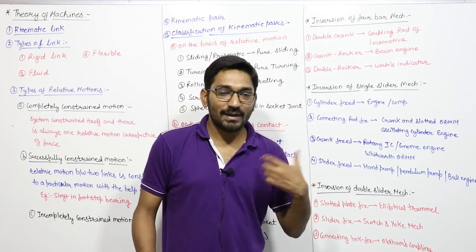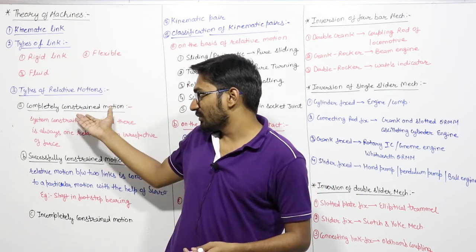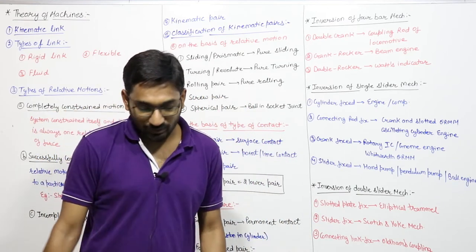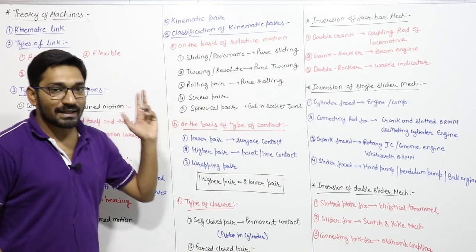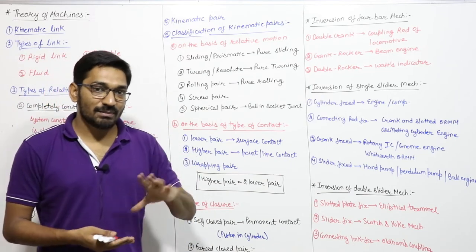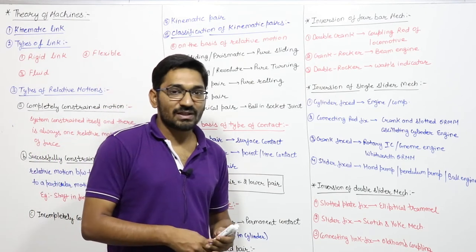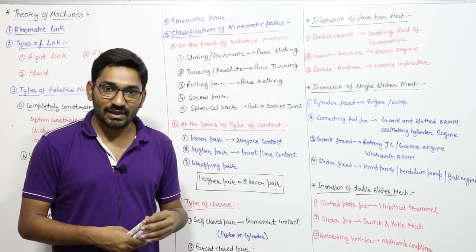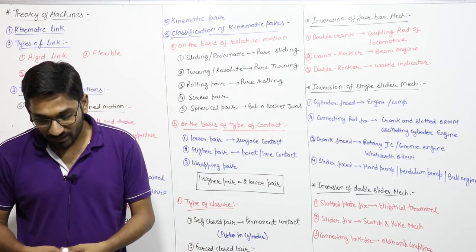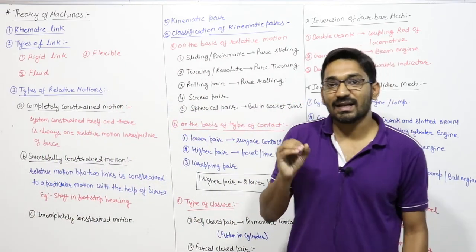We only want either successfully constrained or completely constrained motion. A kinematic pair means the connection between two links. That joint is called a kinematic pair only when the relative motion between the links is a constrained motion.